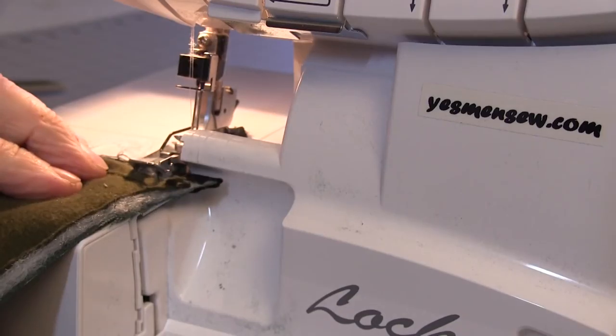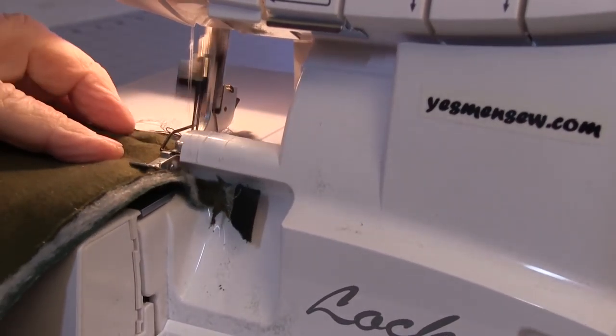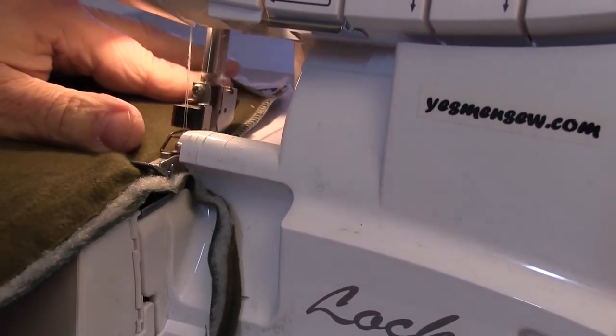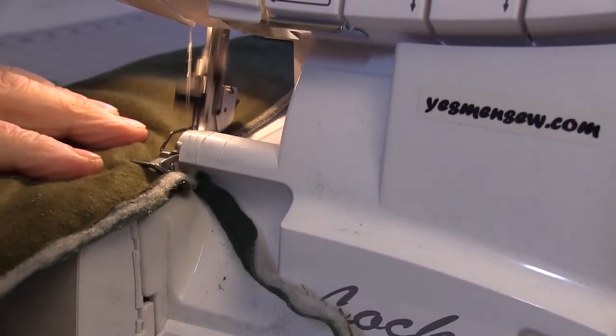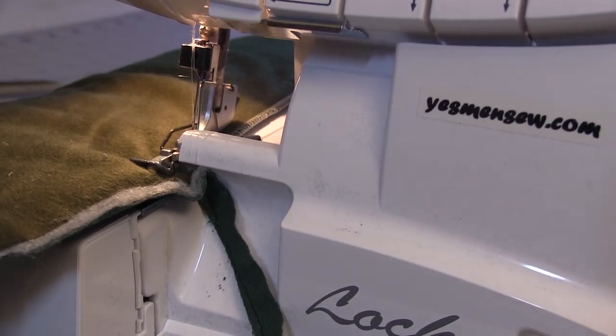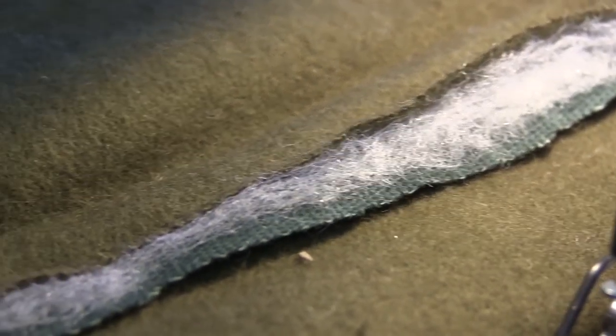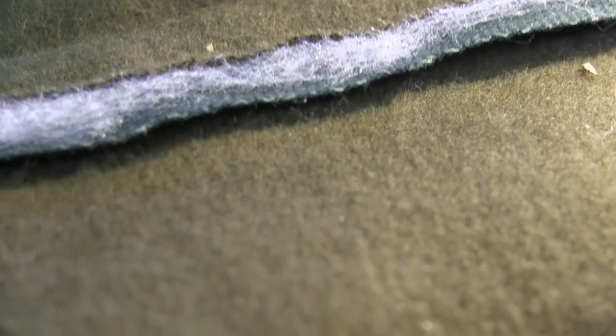The serger trims the edge, sews it together, and then finishes the edge all at one time. You can imagine that this eliminates a couple of steps that we'd have to take with a regular sewing machine and we get a better finish. The sewing machine does a good job at what it's meant to do, however the serger is designed to do a whole lot better job and it does it.